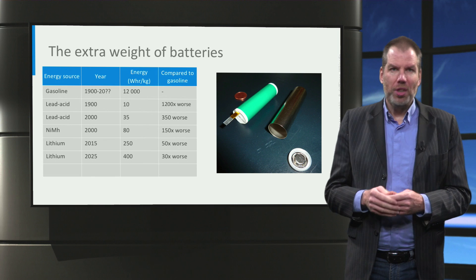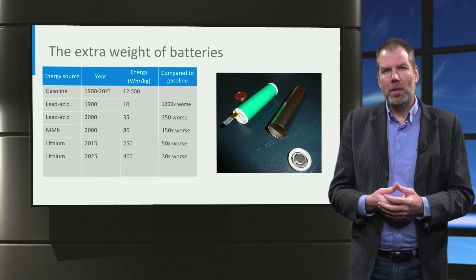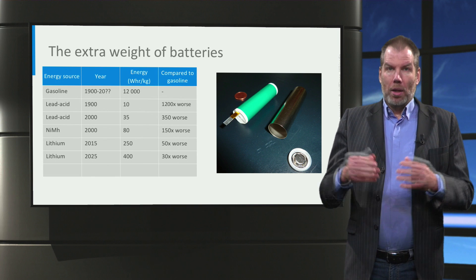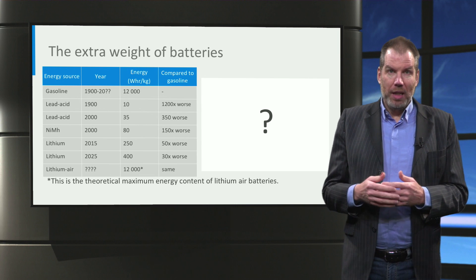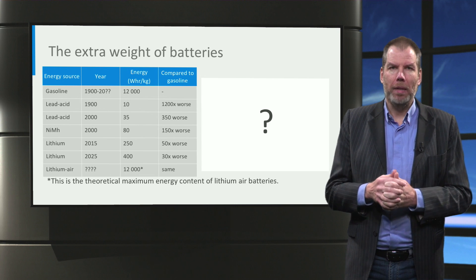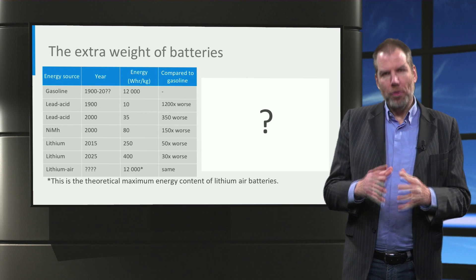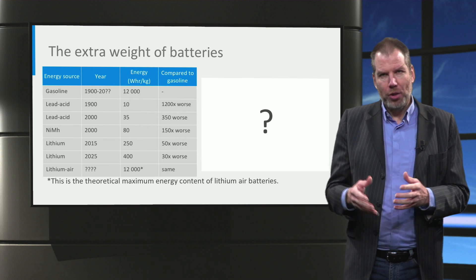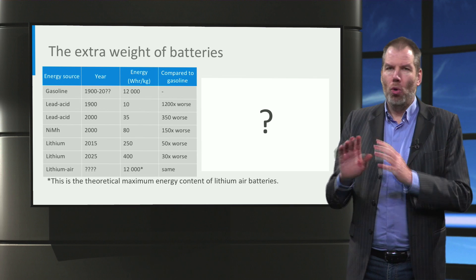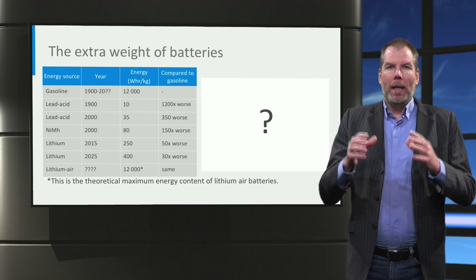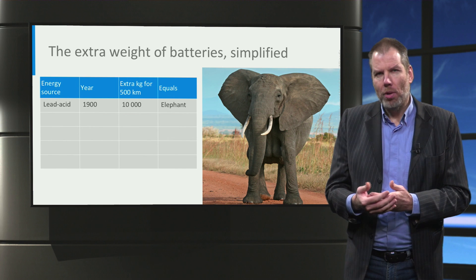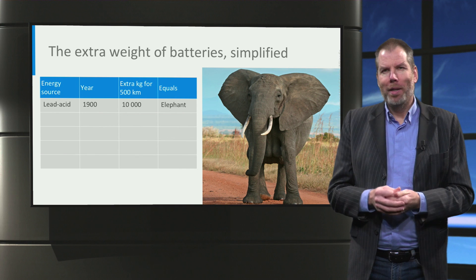In the near future, say within 10 years, we can expect batteries that store about double that — let's say 30 times worse than gasoline. Theoretically, lithium-air batteries can even hold more energy than gasoline, but that's very theoretical. So if we take the efficiency of the motor into account, we could have a theoretical situation where the batteries are actually lighter. However, that's a long-term perspective. It's really important to understand how this works in practice, because in practice the difference becomes much smaller.